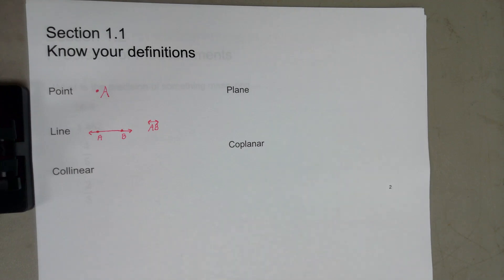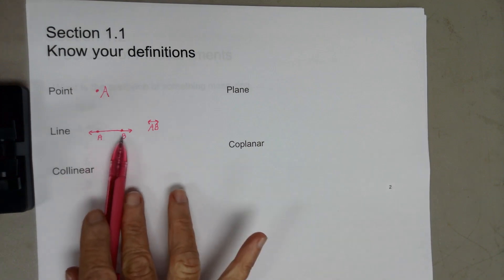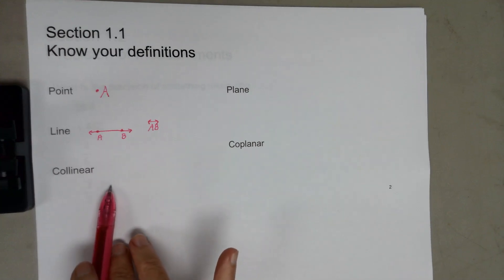Collinear would be points that are on the same line. For instance, A and B up here are collinear.